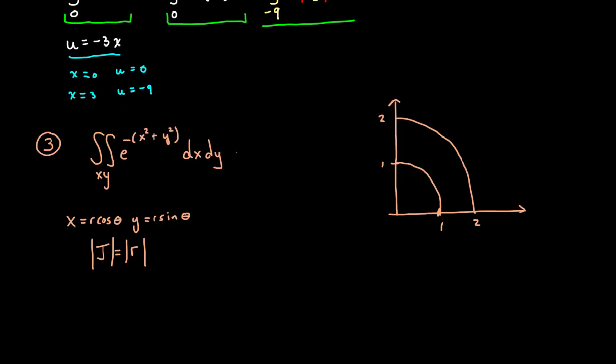In example three, where we did a polar transformation, we set this up and then we said e to the negative r squared, we put in the absolute value of the jacobian, and we went dr d theta. And we didn't directly relate bounds to bounds.